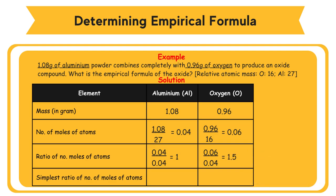Simplest ratio of number of moles of atoms: 2 and 3 — that is, 2 moles of aluminium atoms combined with 3 moles of oxygen atoms. So the empirical formula of aluminium oxide is Al₂O₃.